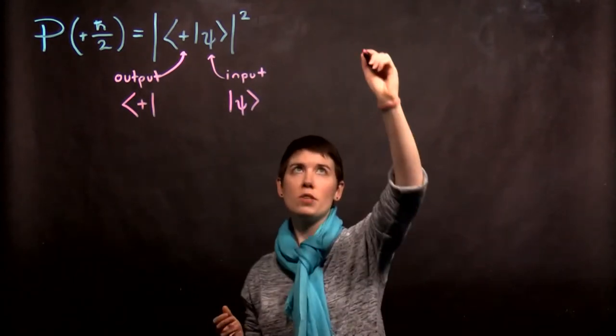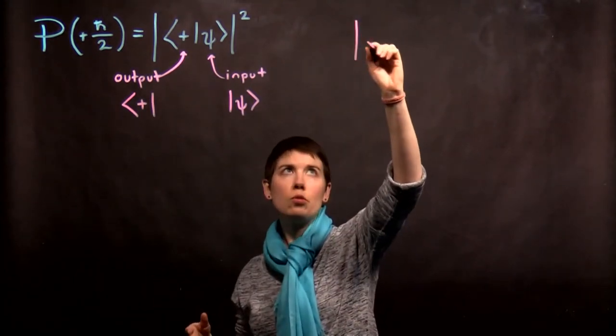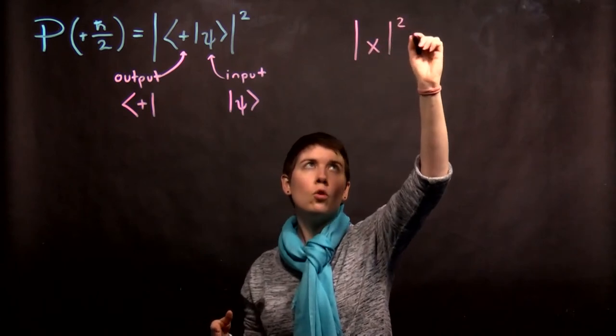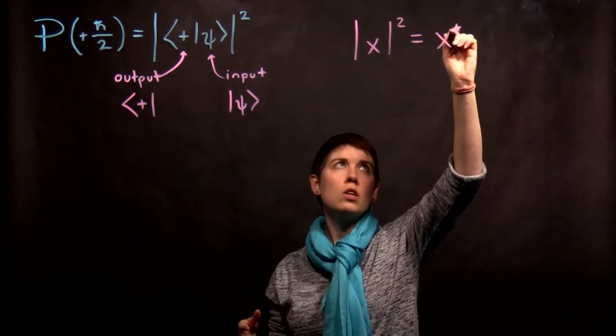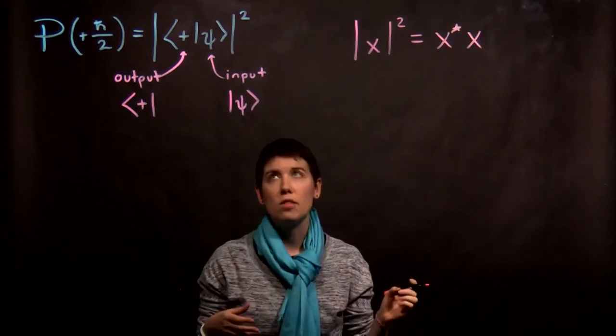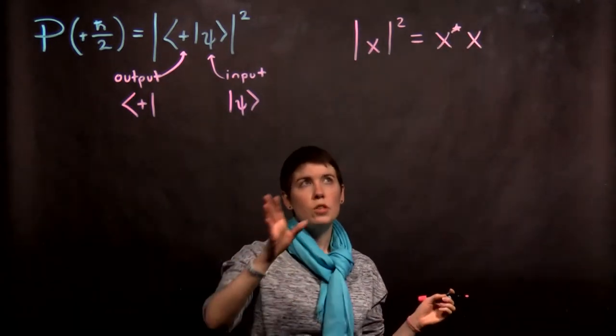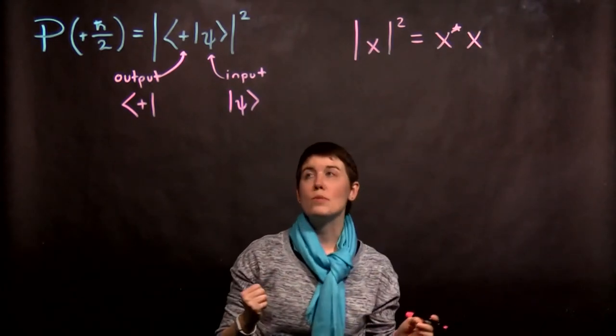Now magnitude in this case is important because we have complex numbers. So when we have something here, like magnitude x squared, what you have to do is take your complex conjugate, and then multiply that by the value itself. So don't forget that we are dealing with complex numbers here.